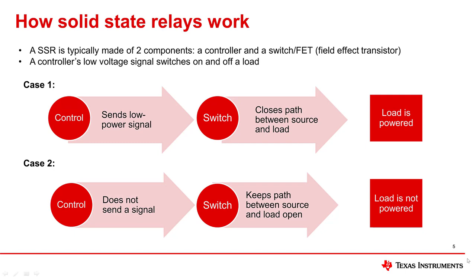How does a solid-state relay work? An SSR typically comprises two main components: a controller and a switch or FET. The controller's low-voltage signal switches the load on and off. When the control sends a low-power signal to the switch, it closes the path between the source and the load, powering the load. When the control does not send a signal to the switch, it keeps the path between the source and the load open, so the load does not get powered.